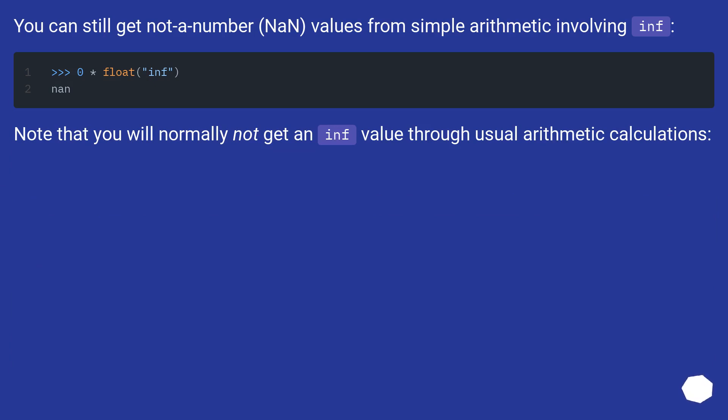You can still get not a number, NaN, values from simple arithmetic involving inf. Note that you will normally not get a NaN value through usual arithmetic calculations.